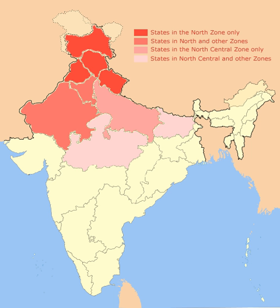North India is a loosely defined region consisting of the northern part of India. The dominant geographical features of North India are the Indus-Gangetic Plain and the Himalayas, which demarcate the region from the Tibetan Plateau and Central Asia.